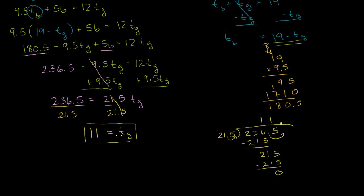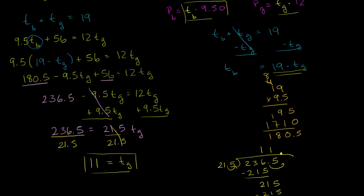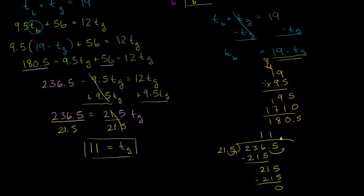Substituting back: t_b equals 19 minus t_g, which is 19 minus 11, giving 8 hours babysitting. So she spent 8 hours babysitting and 11 hours at the grocery. Both add up to 19, and you can verify the second equation holds as well.